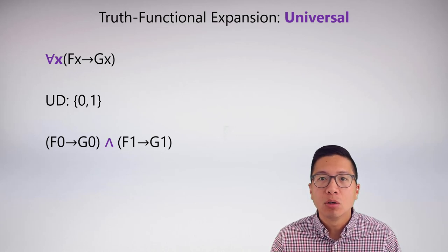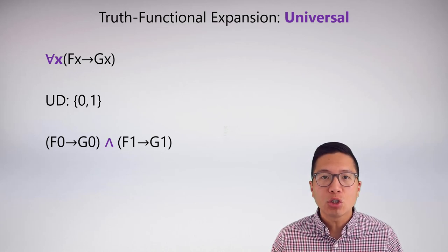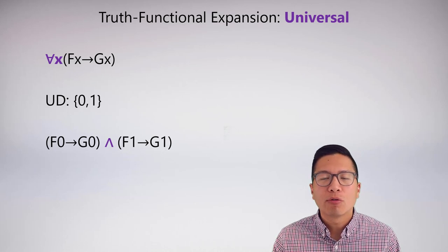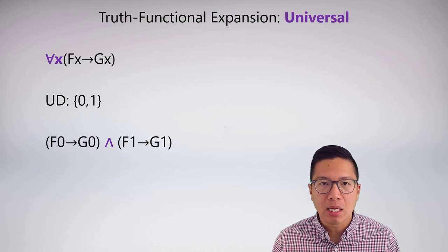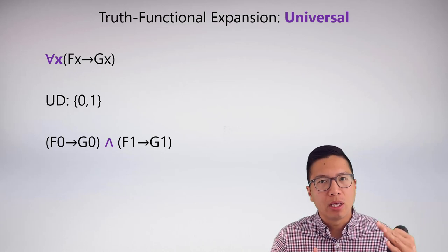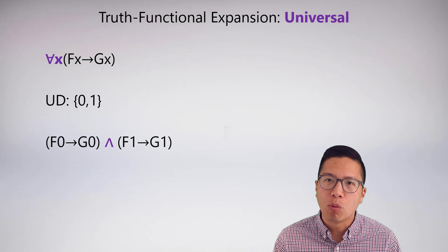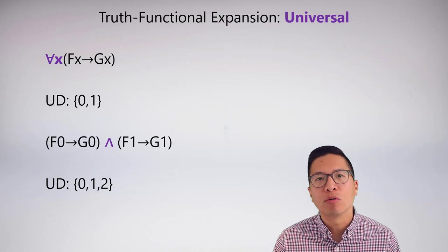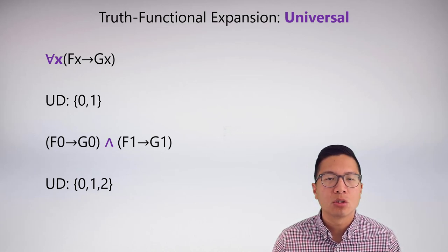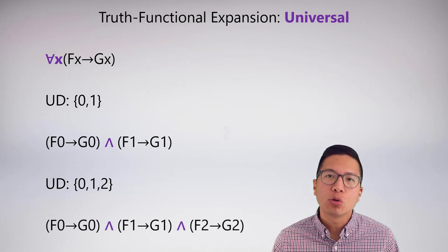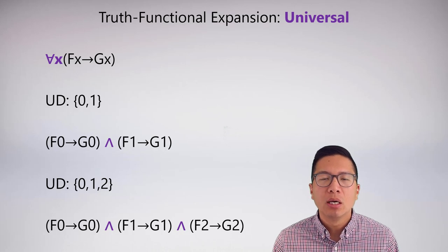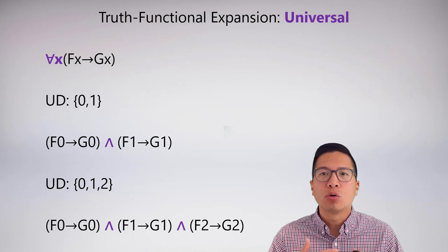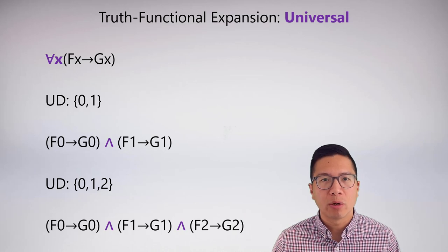These strings of statements are just the statement instantiated to the first member of our universe of discourse, then the second member, and so on. So 'for all x, Fx arrow Gx' means: if 0 is an F then 0 is a G, and if 1 is an F then 1 is a G. If my universe grows to include 0, 1, and 2, then the truth functional expansion adds: if 2 is an F, then 2 is a G. This goes on for as large a universe of discourse as we want.